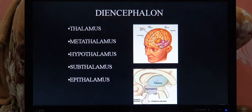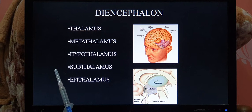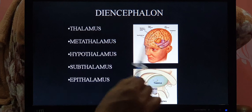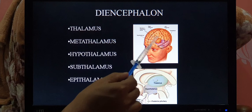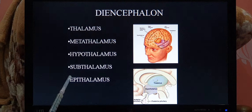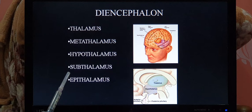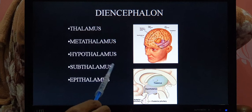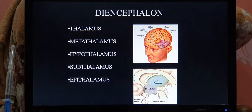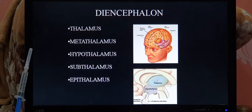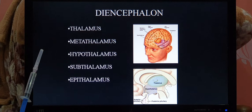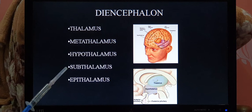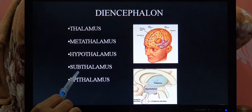The diencephalon includes thalamus, metathalamus, hypothalamus, subthalamus, and epithalamus. The main entities are the thalamus and hypothalamus. The thalamus is an egg-shaped structure at the base of the cerebrum — two egg-shaped structures — mainly for sensory information processing, so it is also known as the sensory relay station. Just below the thalamus is the hypothalamus, which is mainly related to autonomic control and is also known as the biggest autonomic ganglion.